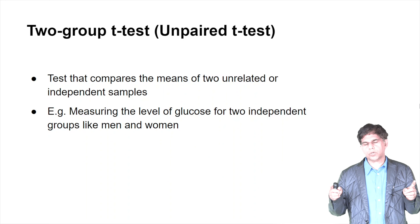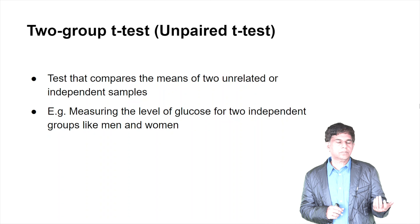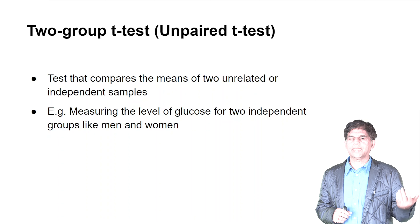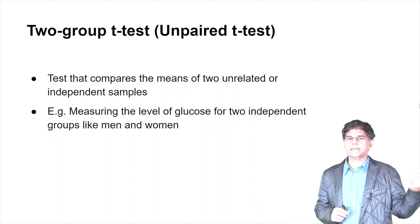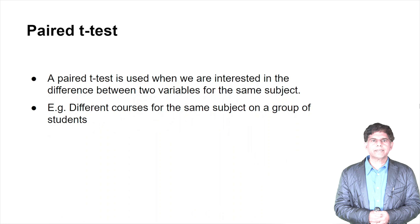The two-group t-test, also called the unpaired t-test, compares the means of two unrelated or independent samples. You have two independent samples — for example, measuring the level of glucose from two independent groups like men and women: glucose in men versus glucose in women.